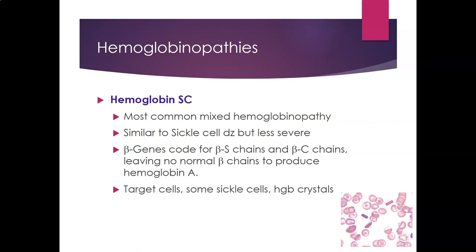Hemoglobin SC is the most common mixed hemoglobinopathy. It is similar to sickle cell disease but less severe. The beta genes code for beta sickle cell chains and beta C chains, so there is no normal hemoglobin A produced at all. On the blood smear you will see target cells, some sickle cells, and hemoglobin C crystals.